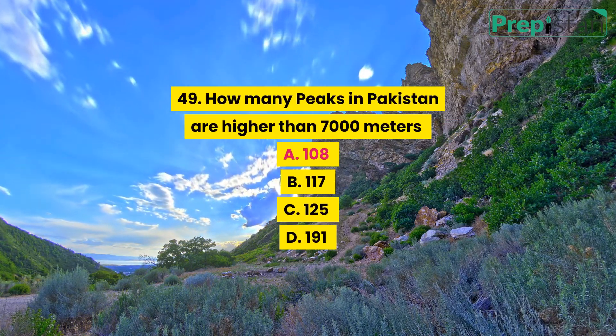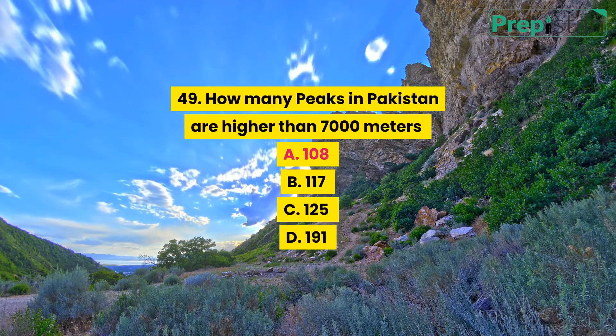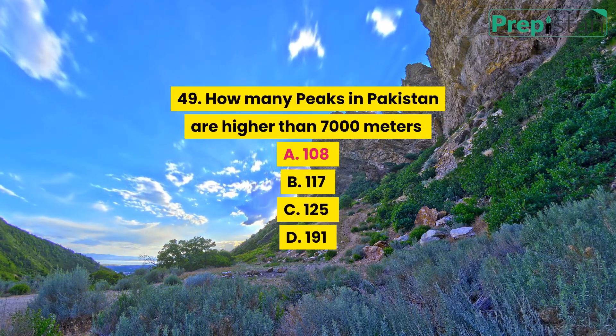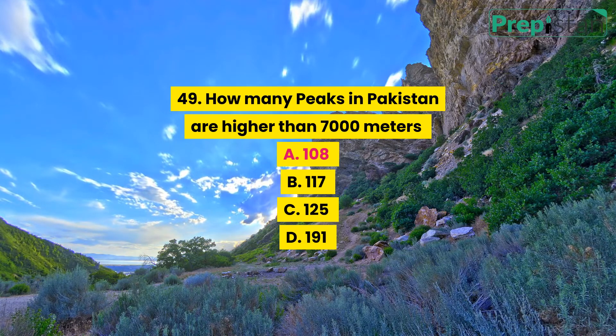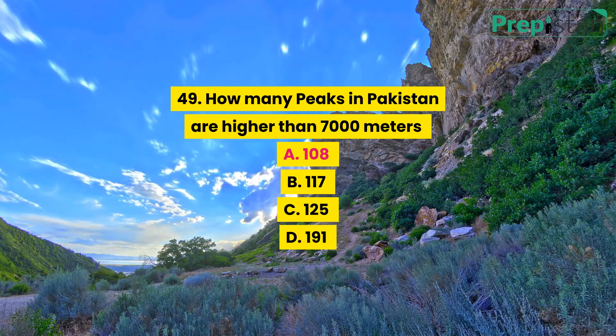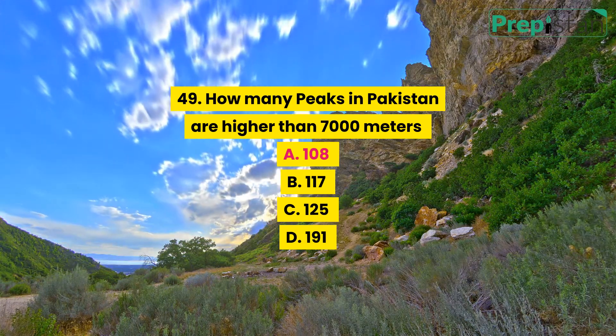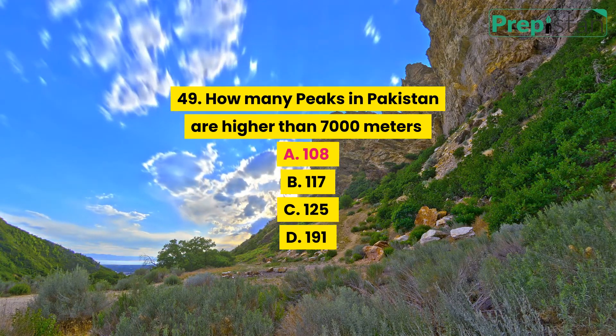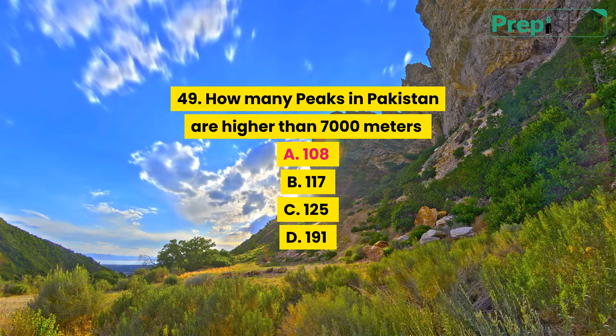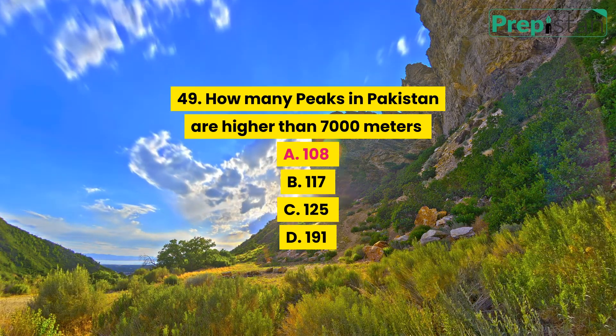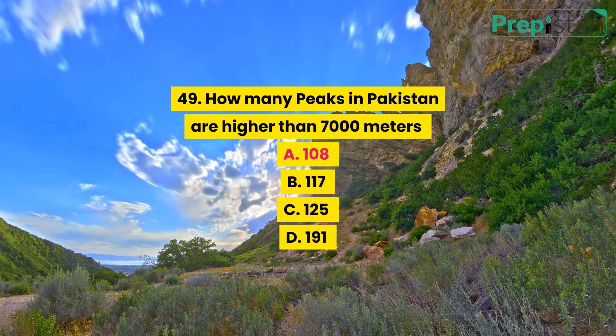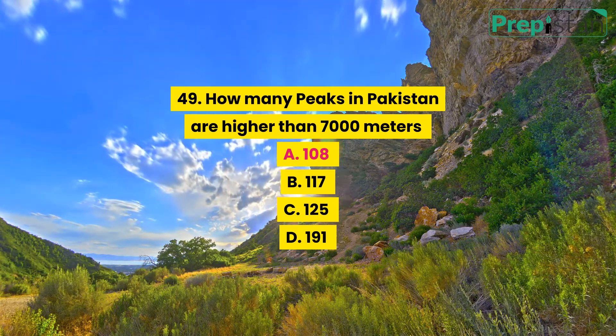Question 49: How many peaks in Pakistan are higher than 7,000 meters? A. 108, B. 117, C. 125, D. 191.